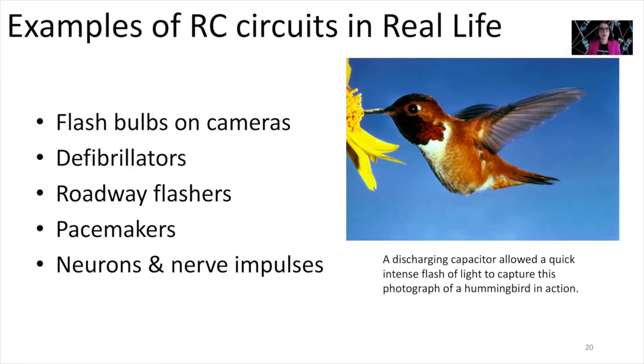Here are some specific examples of resistor capacitor circuits in real life. For example, the flash bulb on a camera. So you store up charge in a capacitor, and then the capacitor is connected to the flash bulbs on your camera. And whenever you're ready to take a picture that requires a flash, you press the button, and then those capacitors immediately release all that charge, and it sends a flash of light.